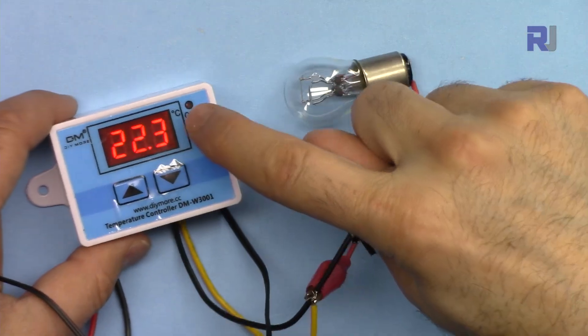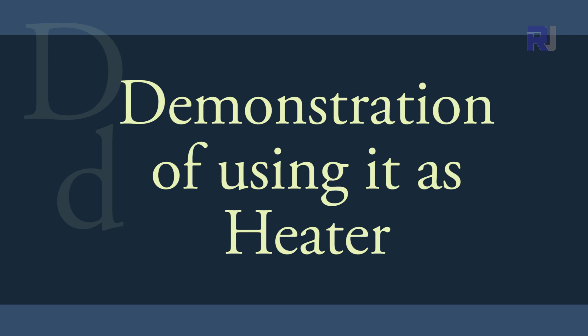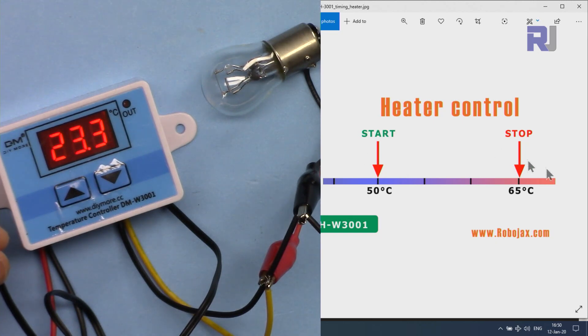Because the output is off the light is also off. Now let me show you how we can use it as a heater or heat control. We have to set our start temperature. For example, if we wanted to keep it between 50 to 65, it means that when the temperature is below 50 it will turn on the heater.